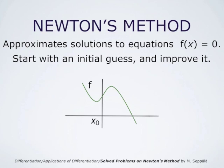Here our initial guess x0 is a negative number. To improve that approximation for the solution, we go up to the graph of f to the point (x0, f(x0)), and we draw the line tangent to the graph of f at that point. This tangent line, the red line, intersects the x-axis at the point x1, which is our next approximation of the solution. This is clearly a better approximation than x0 was.